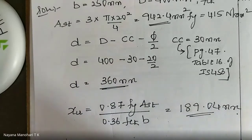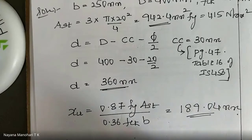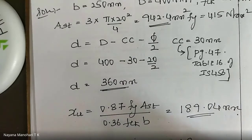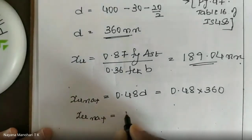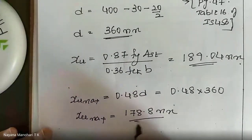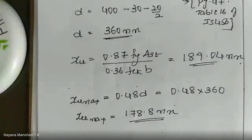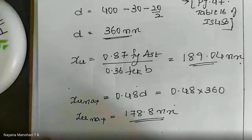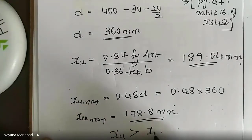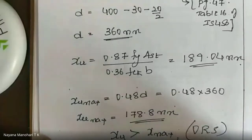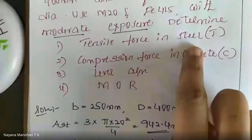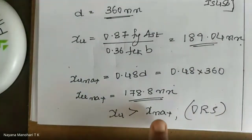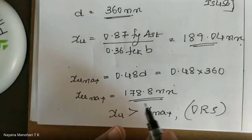Once XU is calculated, compare it with XU max. For Fe415, XU max = 0.48 × d = 0.48 × 360 = 172.8 mm. Since XU (199.04 mm) is greater than XU max (172.8 mm), the section is an over-reinforced section. Therefore, replace XU with XU max (XU limit) wherever required in all subsequent calculations.